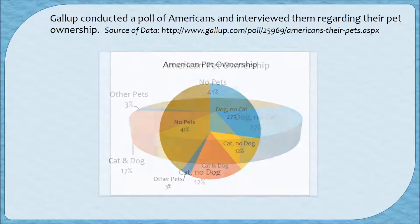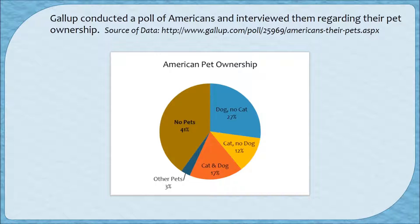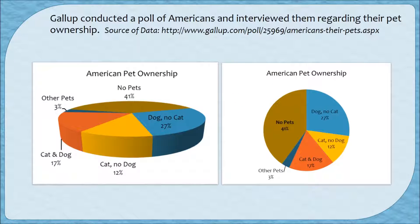But look what happens when we flatten this graph out. The no-pets portion that was greatly diminished in the 3D version is almost half the graph at 41%, showing that a substantial number of Americans don't own a pet at all. Also, the blue, yellow, and red pieces — cat and dog, cat no dog, and dog no cat — appeared about the same size in 3D, but when flattened, dog no cat is more than twice as large as cat no dog. Comparing the two charts side by side, the 41% is very diminished in the 3D version but is a substantial portion of the flat version, and the cat/dog pieces look equal in 3D but are very different when flattened.